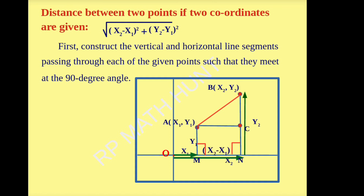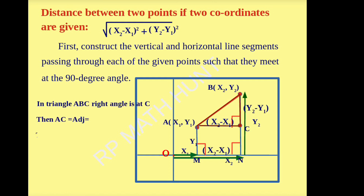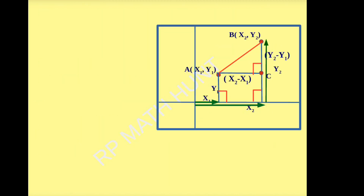In rectangle AMNC, MN is equal to AC since opposite sides of a rectangle are equal. Now CB is equal to BN minus CN, that is y2 − y1. In triangle ABC, the right angle is at C. Then AC is the adjacent side equal to (x2 − x1) and BC is the opposite side equal to (y2 − y1). We have to find the hypotenuse AB using the Pythagoras theorem.